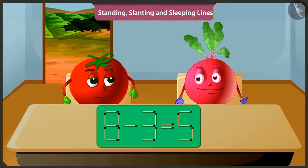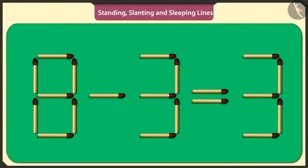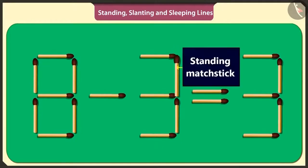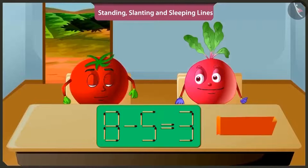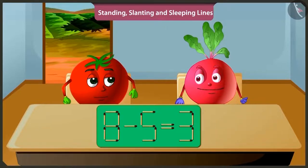Pitu, there is another way to solve this puzzle. Look. Now out of the subtracted number three in this puzzle, by removing this standing matchstick and placing it vertically here, then three is converted to five and thus the puzzle will be solved. Yes, when we subtract five from eight, we get three. This is fun.